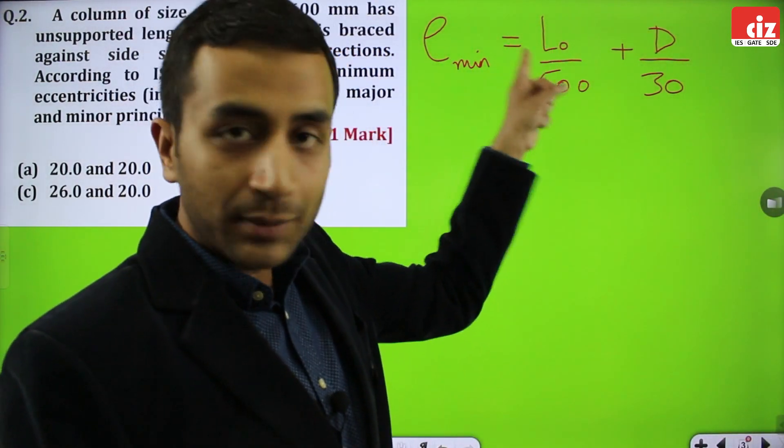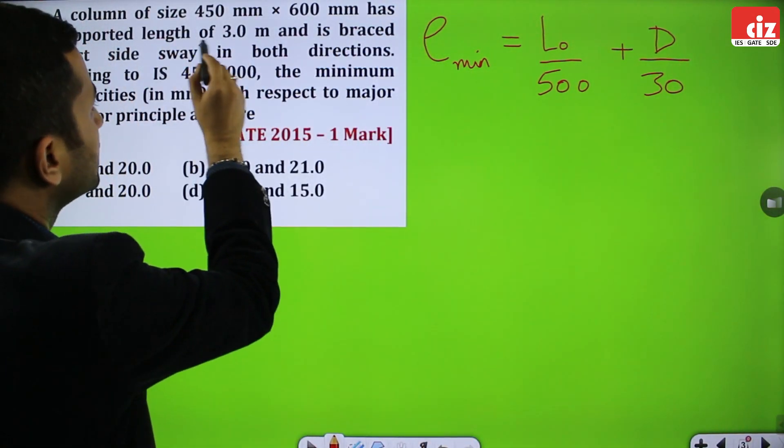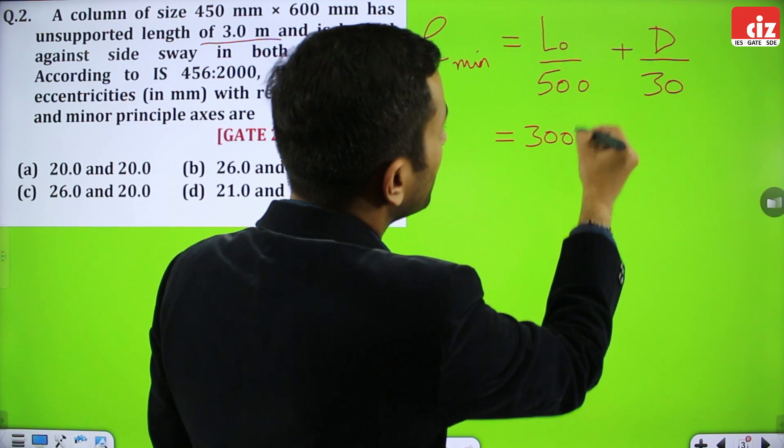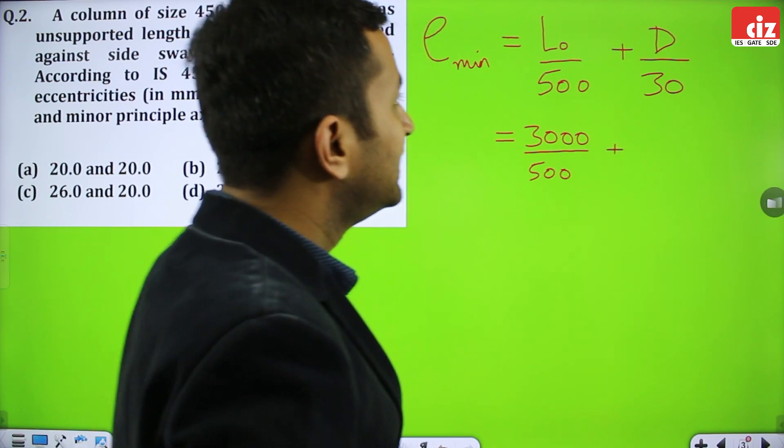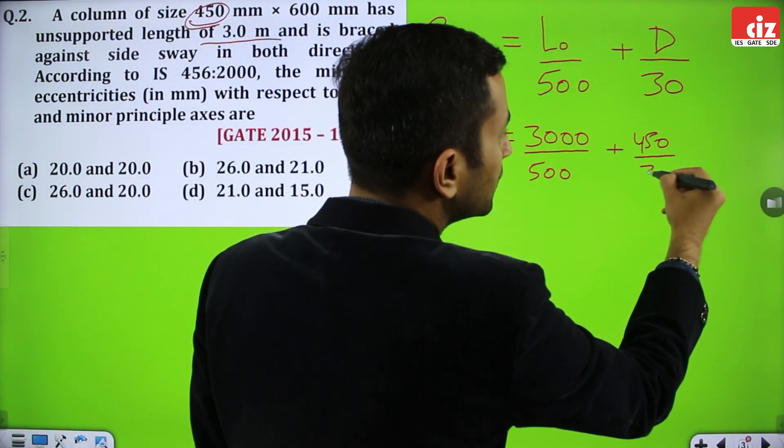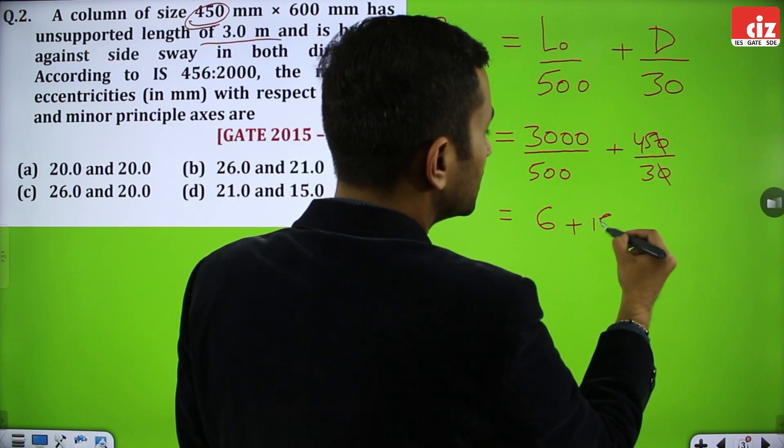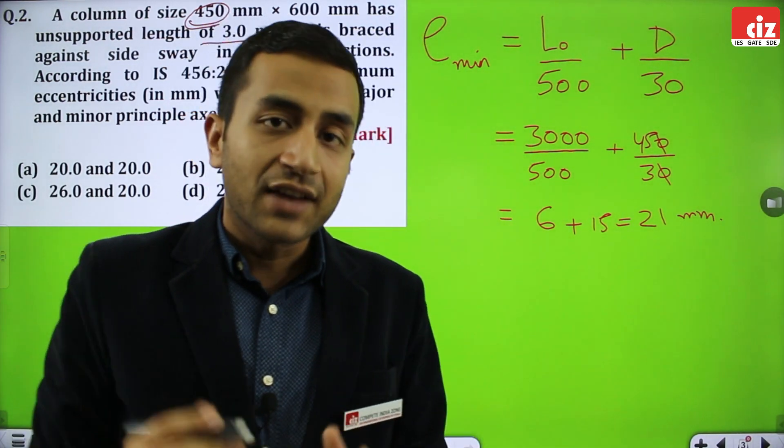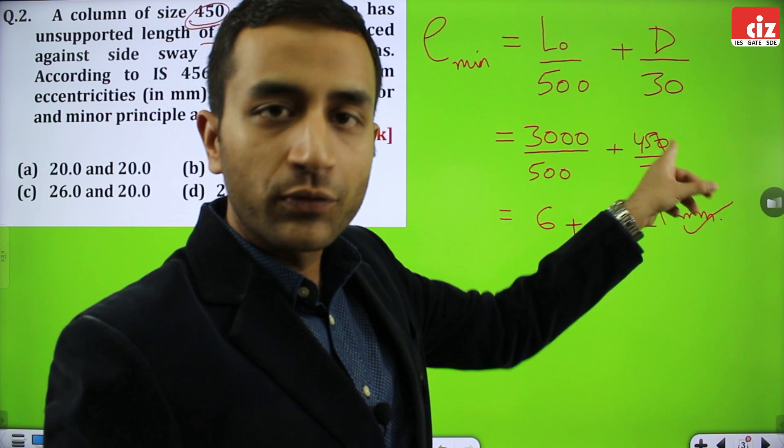E minimum is equal to L0 by 500 plus D by 30, where L0 is the unsupported length and D is the lateral dimension. Unsupported length is 3 meters, so you put L0 as 3000 because this is all in mm. So 3000 by 500 plus D. Let's say that we put 450. If I put 450 by 30, this is 6 plus 15, so that means 21 mm.